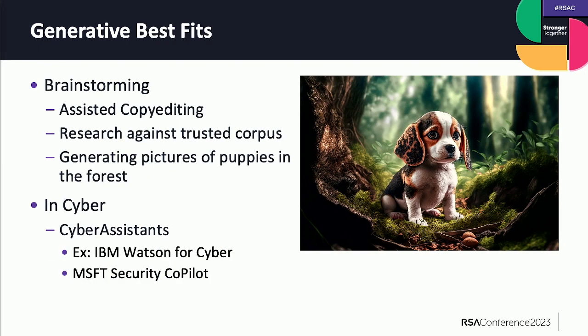So where is generative AI really good? It's great at brainstorming, great at prompting you as a human to give you different ideas. If you're doing research and asking questions against a very trusted corpus of knowledge, it could be great there. It's really good at generating puppies in the forest — and it's good for things like the cyber assistance.